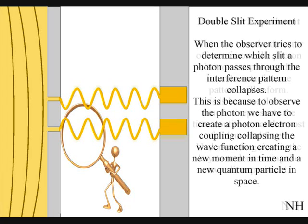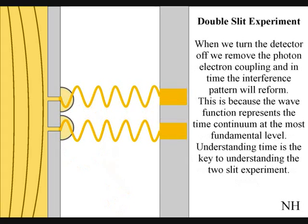If we turn the detector off, we remove the photon-electron coupling, and in time, the interference pattern reforms.